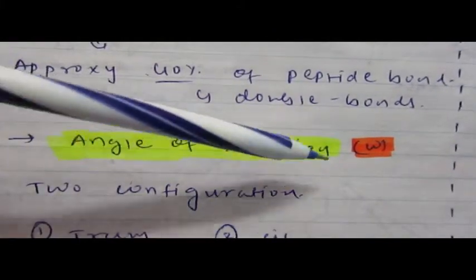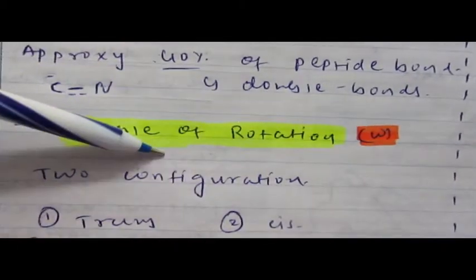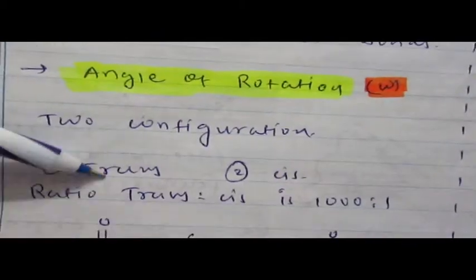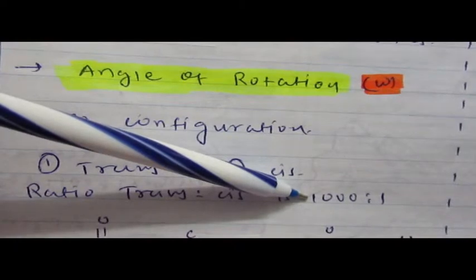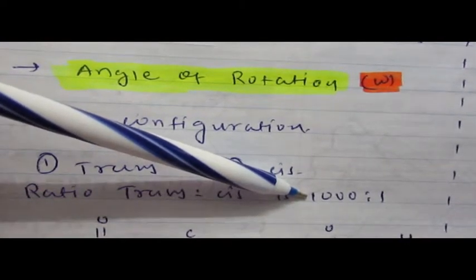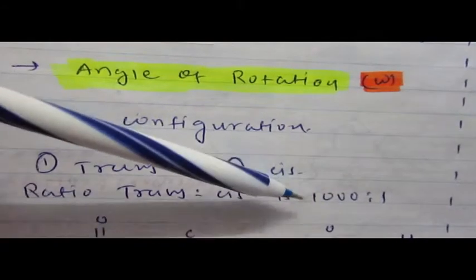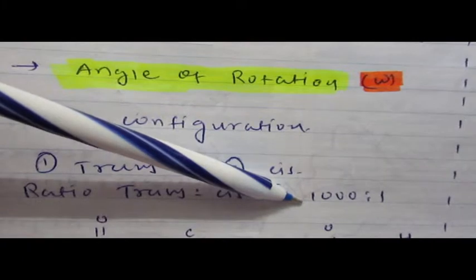Due to this partial double bond character, it contains different angles of rotation denoted as omega. Omega angle of rotation has two basic conformations: trans and cis. But generally the trans to cis ratio is 1000 to 1, so for every thousand trans configurations we find only one cis configuration.